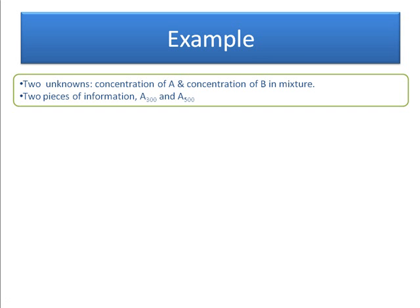Let's look at an example. So we have two unknowns here: the concentration of A and the concentration of B in a mixture. And we have two pieces of information: the absorbance at 300 and the absorbance at 500.